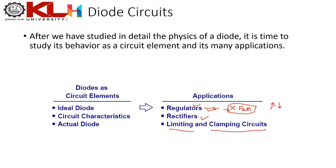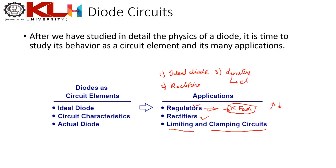In this session we will cover three major topics: first, what an ideal diode is and what its IV characteristics look like; second, rectifiers; and third, limiters — which are usually referred to as clippers. Most textbooks call them clippers, and I will use both terms interchangeably.